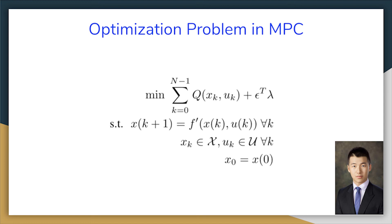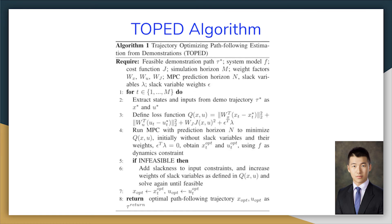We are minimizing the sum of the q function plus this optional slack variable such that we are respecting the original or the new model dynamics for all k. And x_k and u_k are in the given domains, and we have these initial conditions. Note that f-prime represents that we might use a different model than the one used to generate the given trajectory, because we might have different models and noise. Here's the overall TOEPAD algorithm.